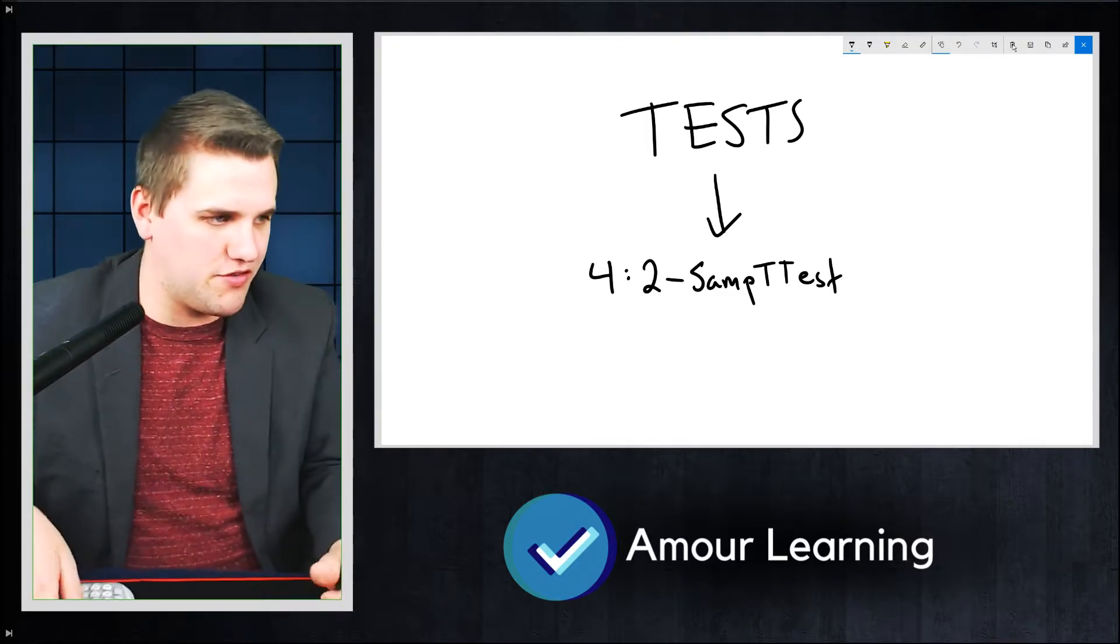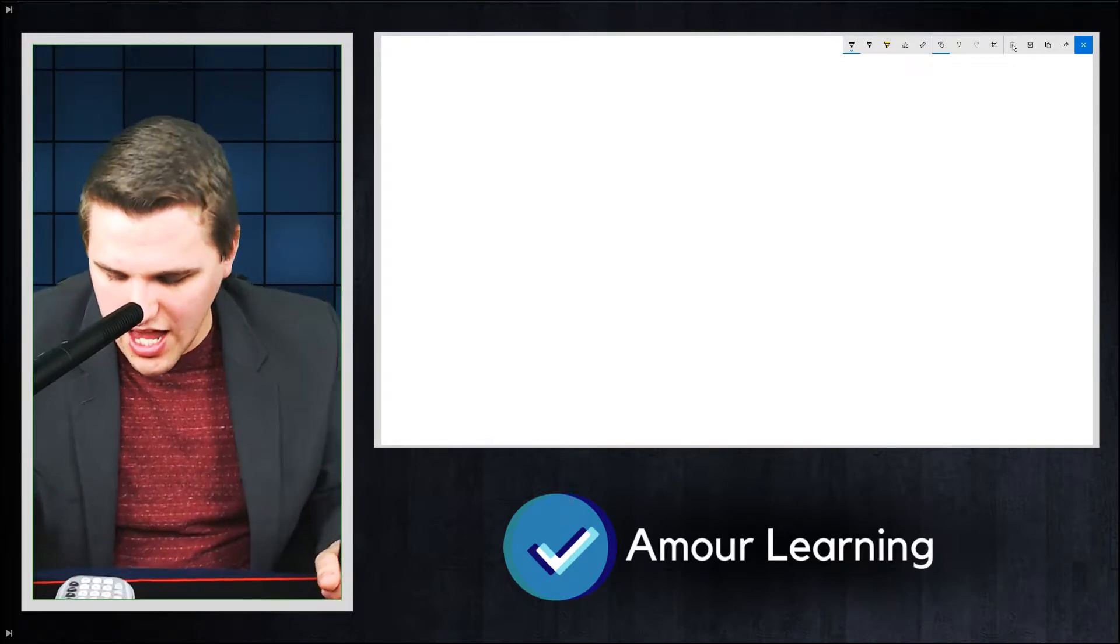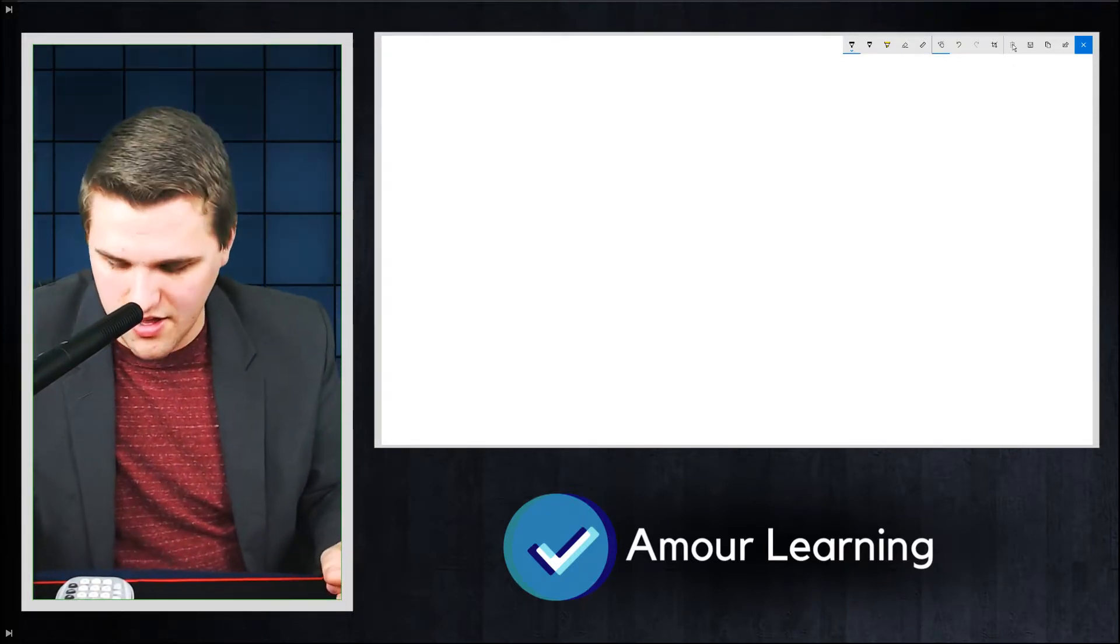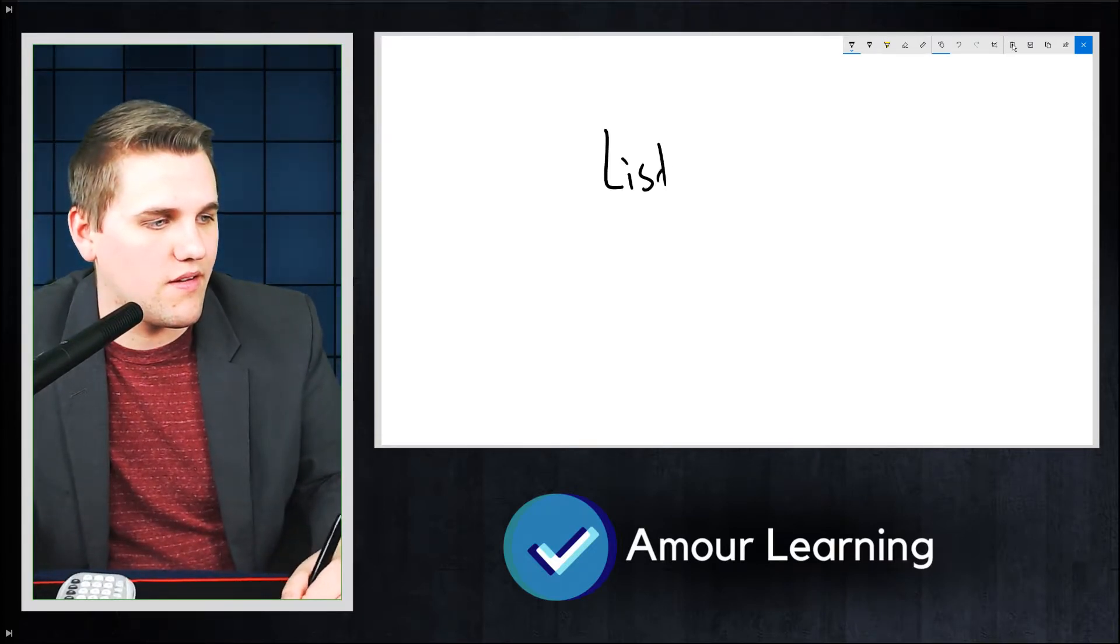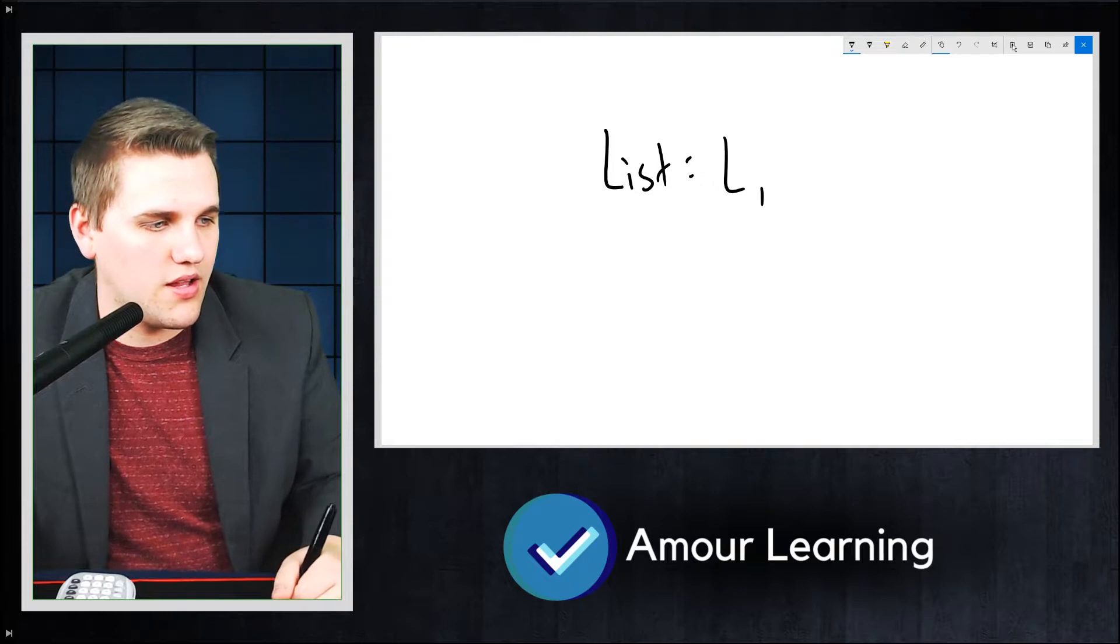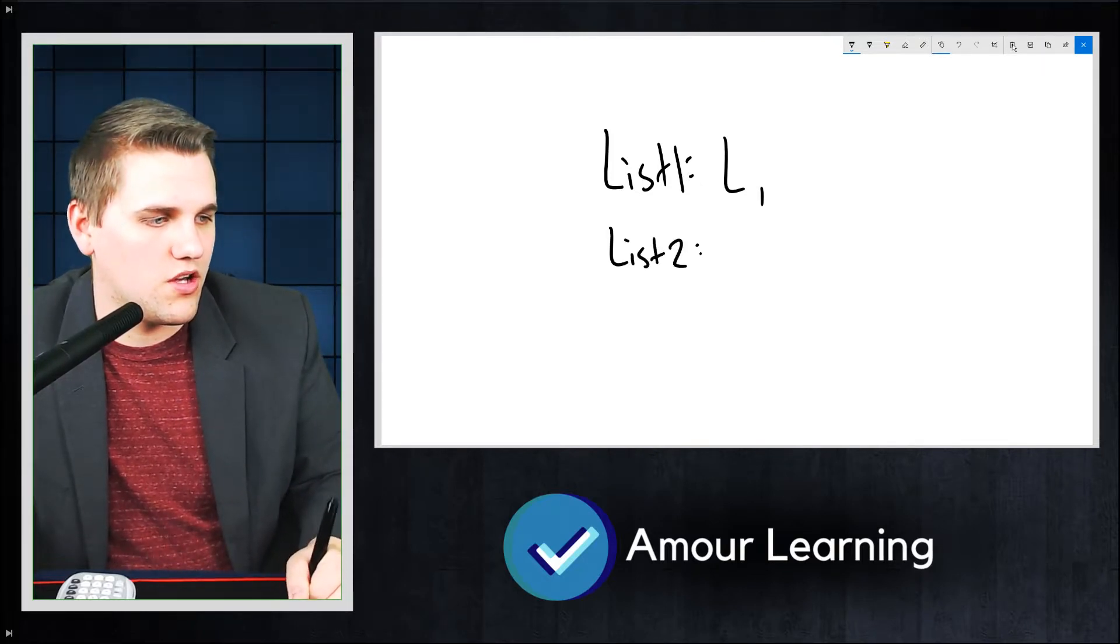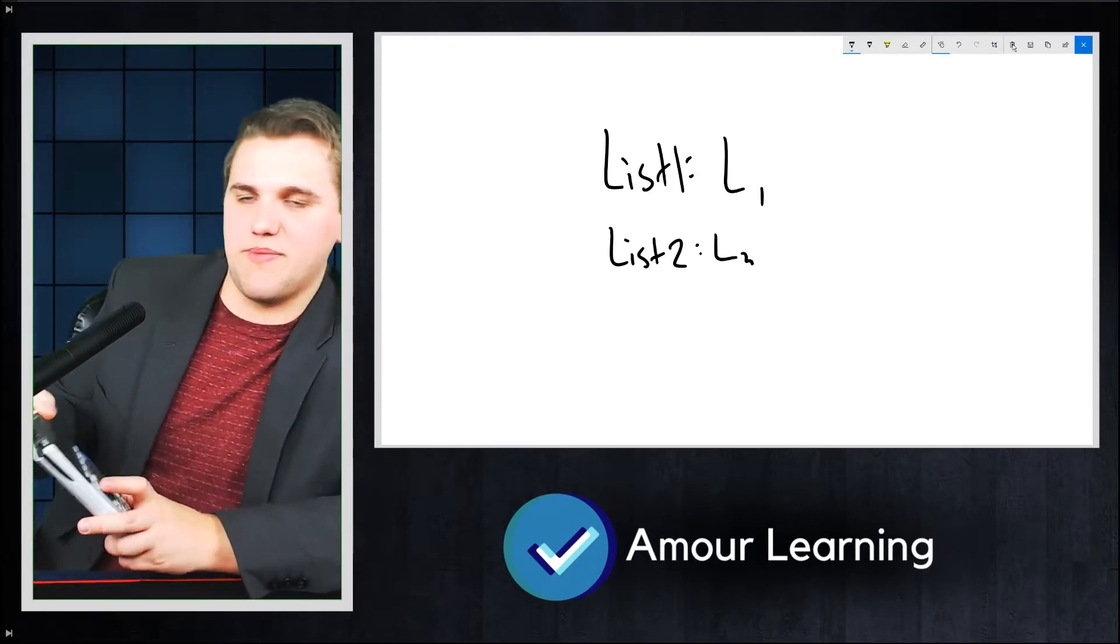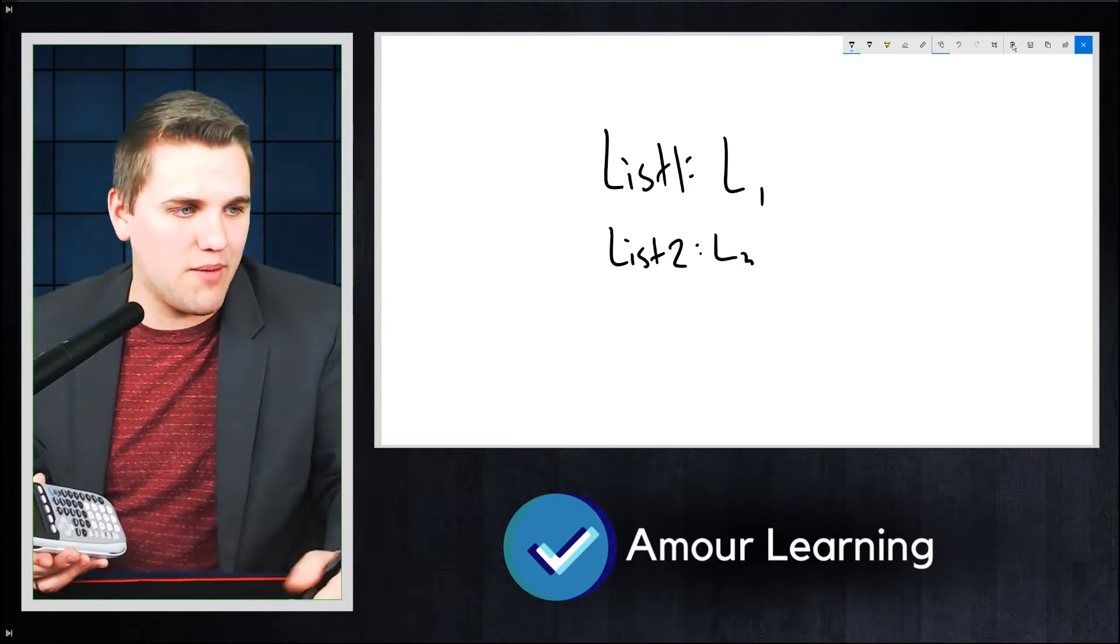And now you're going to see a bunch of other stuff. So first off, you're going to see input is either data or stats. Leave it on data. List 1 should say L1. List 2 should say L2. Now if it doesn't, if it says something else, then what you can do is you can hit 2nd STAT. I'll write it up here. You hit 2nd, and then you hit STAT.